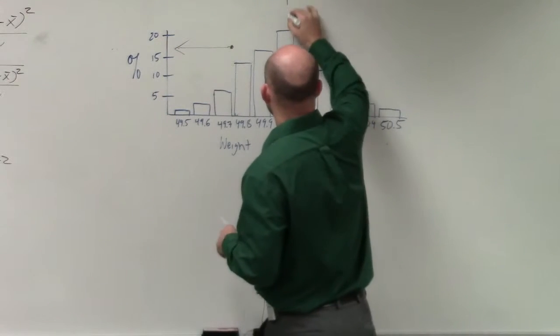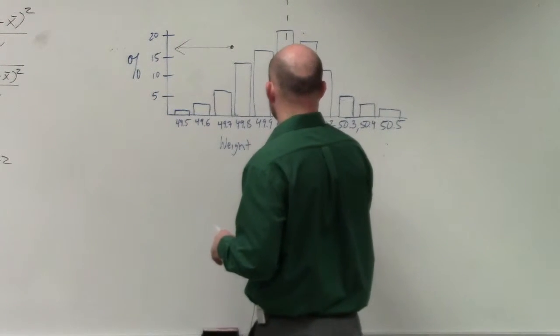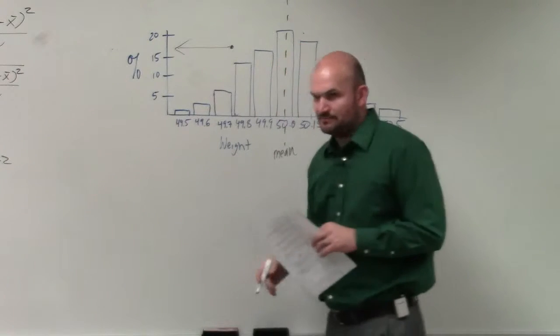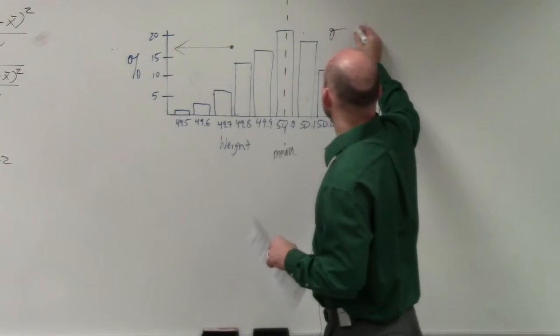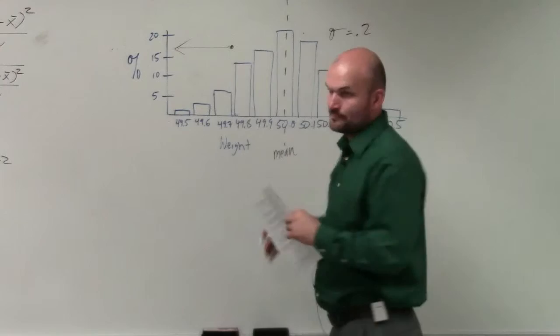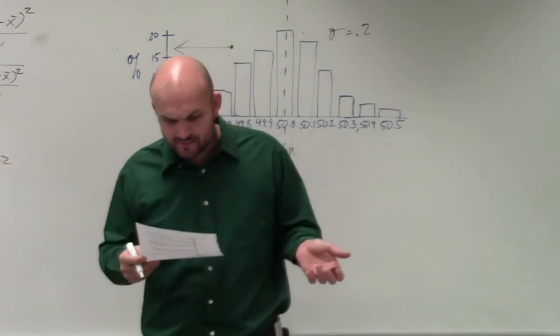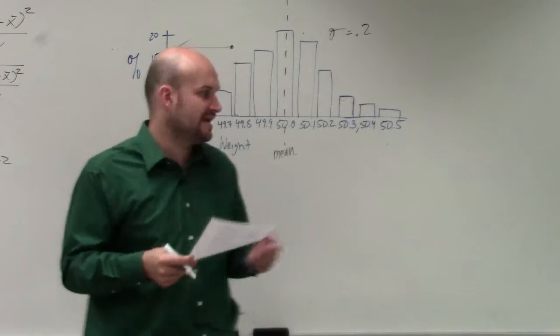So what we talked about last class period, which we'll get in more detail here, here's your mean. They're saying the standard distribution is going to be 0.2. So what they're asking is, what is going to be the bags that are approximately within one standard deviation?